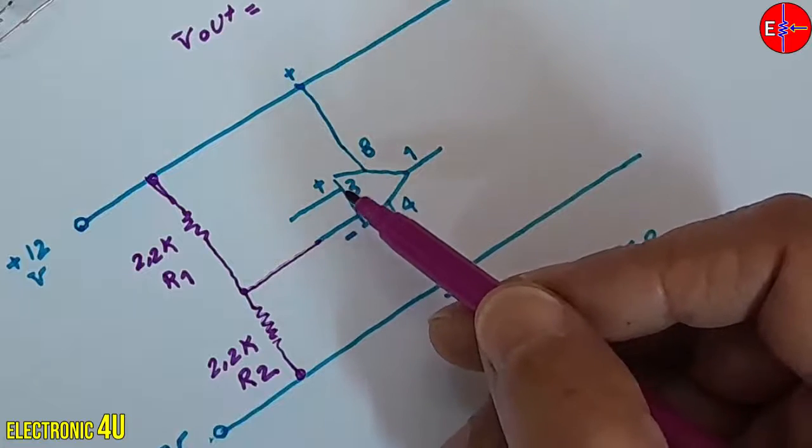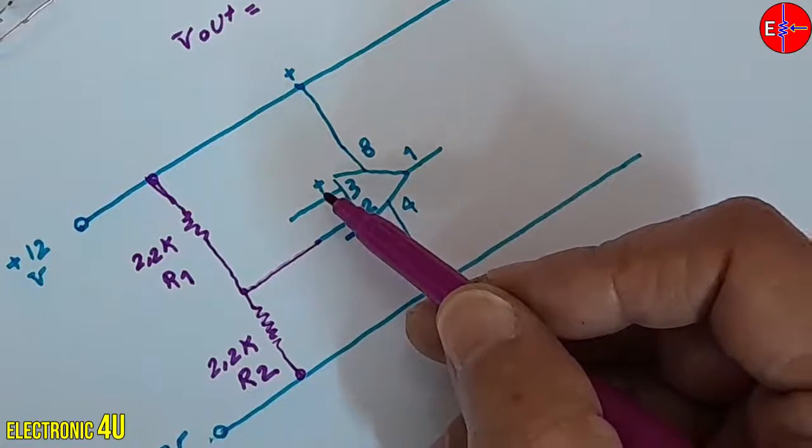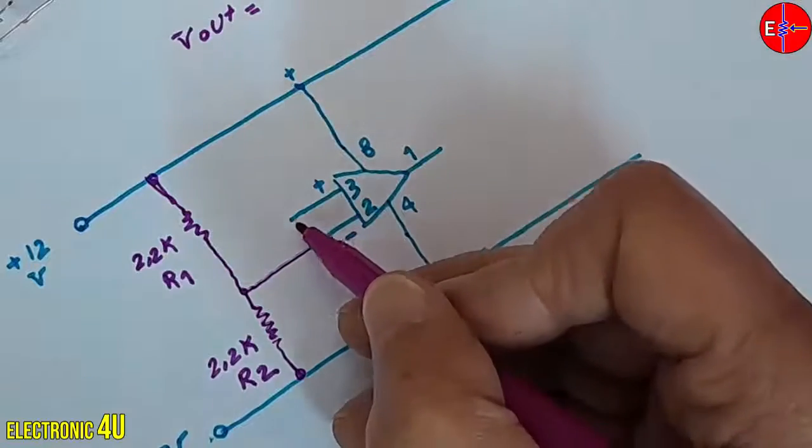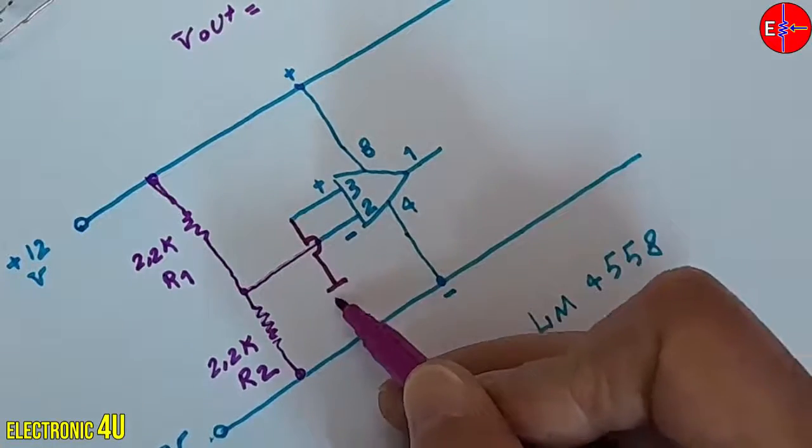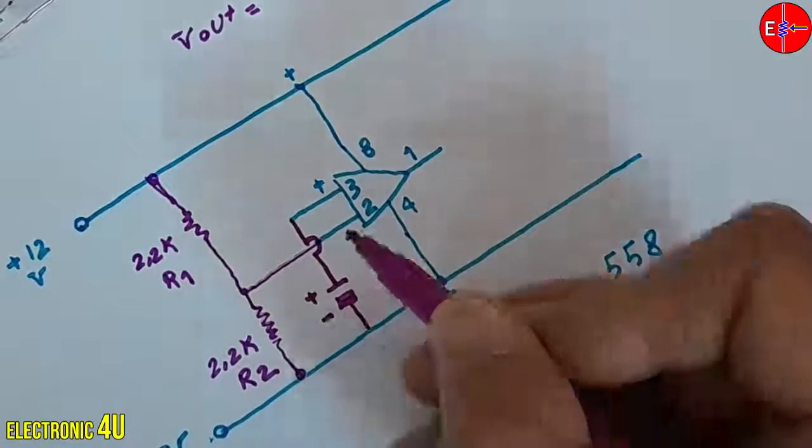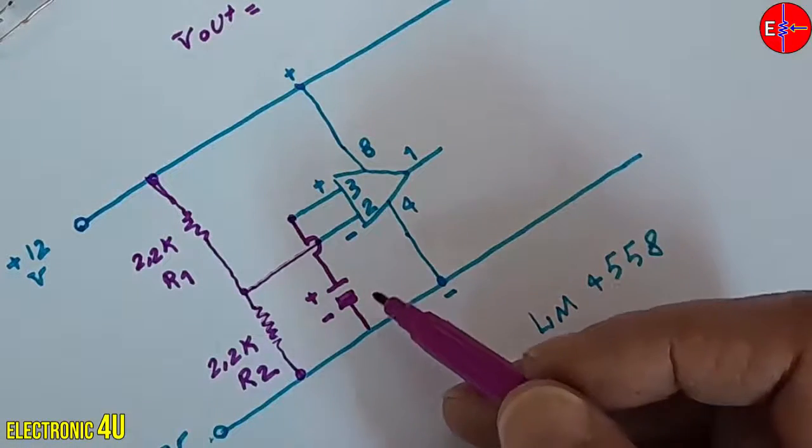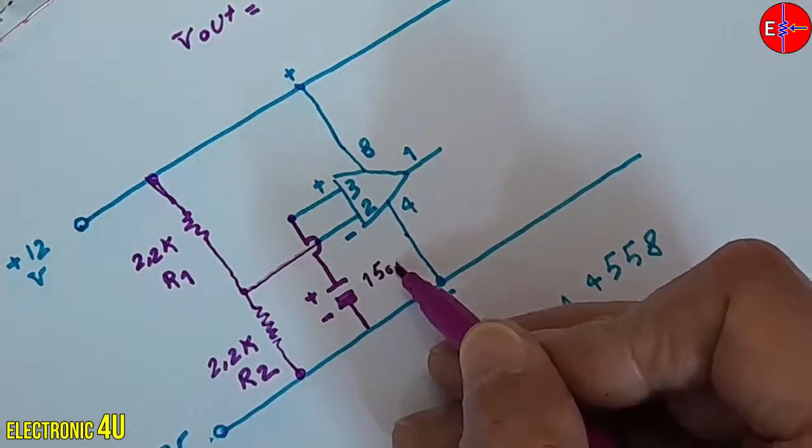Connect the positive side of the capacitor to the non-inverting input, and the negative side to ground. I am using a 1500 microfarad capacitor.